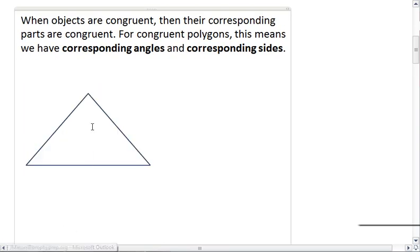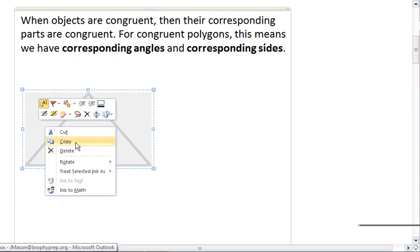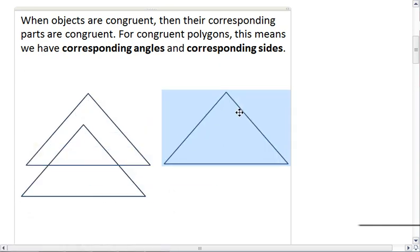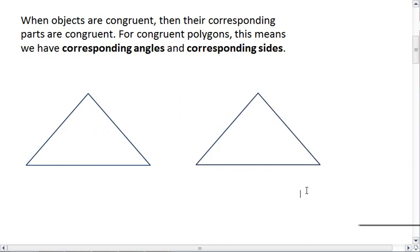Again, I'm just going to go ahead and copy this and paste. And let's label these triangles. So I'm going to tell you that triangle ABC is congruent to triangle DEF. Now the way that we name our triangles when we're saying that they're congruent to one another is important.